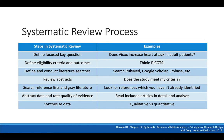So how might we perform a systematic review? Systematic reviews are very structured, so we follow particular steps. Step one, like any research, is to define a focused research question — for our example: does Vioxx increase the risk of heart attack in adult patients? Then, also like other research, we define eligibility criteria, which are inclusion and exclusion criteria, and the outcomes we're going to look at.